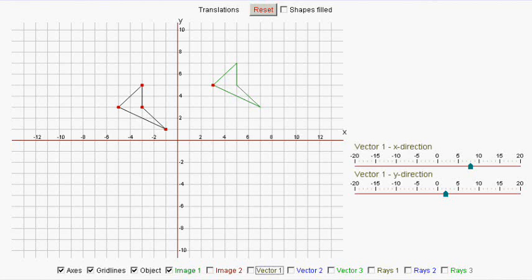Hi. Look at the two shapes on this graph. They're not reflections of each other because they're both the same way round.